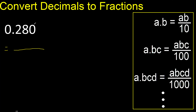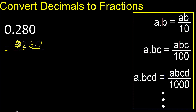First, all the number without point. Like this. Eliminate zero on this side. Here always number one.